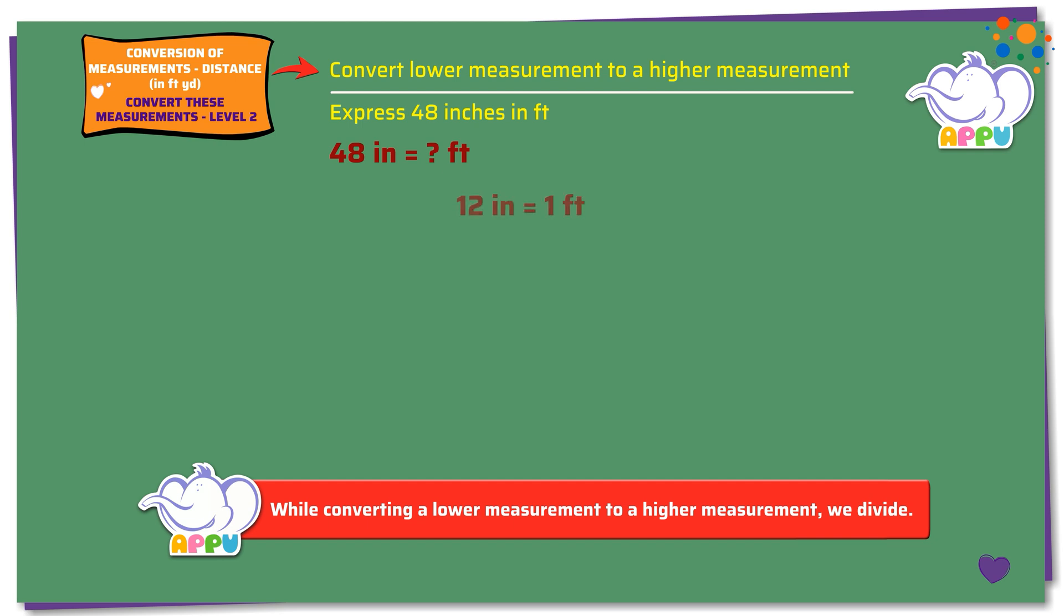We know that 12 inches equals 1 foot. Dividing both sides by 12, we get 12 inches by 12 equals 1 foot by 12.